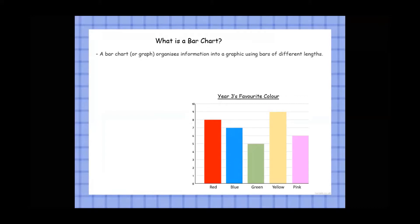On to: what is a bar chart? A bar chart or graph organises information into a graphic using bars of different lengths, and bar charts are an excellent way of being able to compare and sort information.